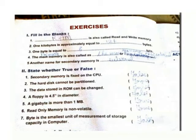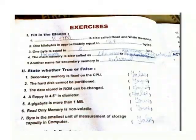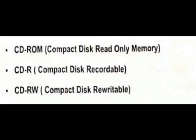An alternate name for secondary memory is external memory. True or false: Secondary memory is fixed on the CD — False. The hard disk cannot be partitioned — True. The data stored in ROM can be erased — False. The floppy is 4.5 inches in diameter — False. Read-Only Memory is non-volatile — True. Abbreviations: RAM — Random Access Memory, ROM — Read-Only Memory.